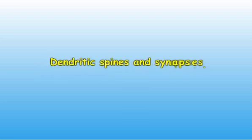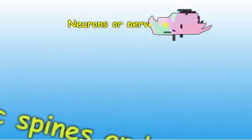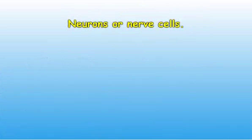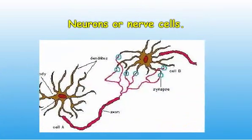This video covers dendritic spines and synapses. There are several parts of neurons or nerve cells: these are the synapses, the dendrites, the cell body, and the axon.